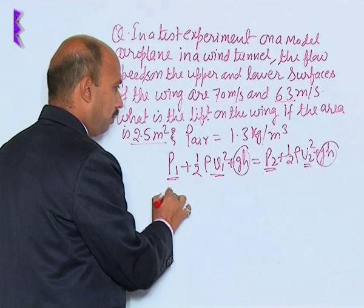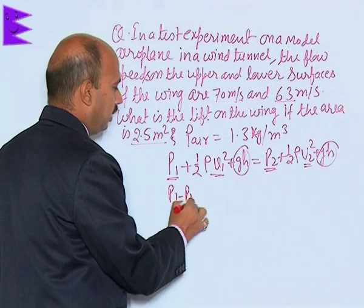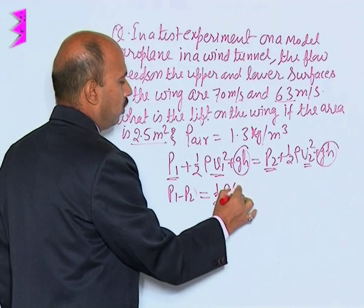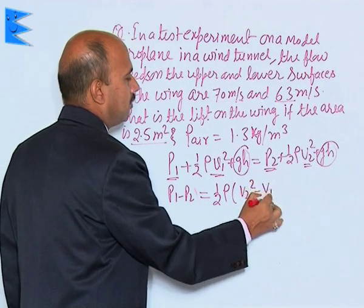So, we can get P1 minus P2 is equal to half rho into V2 square minus V1 square.